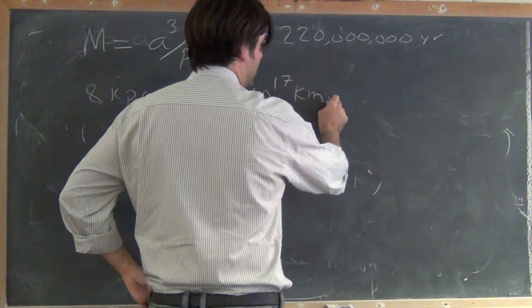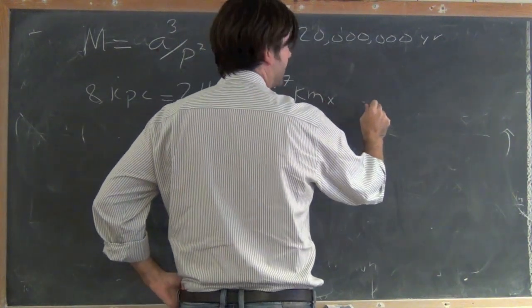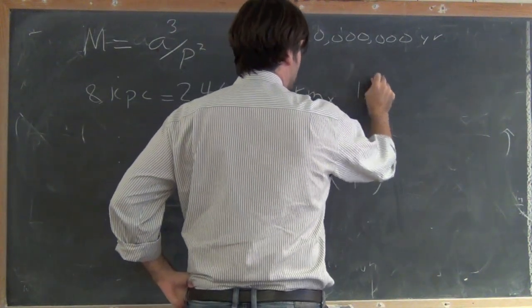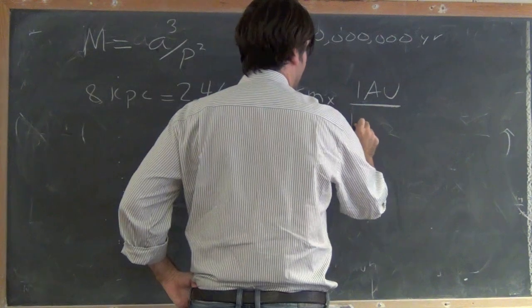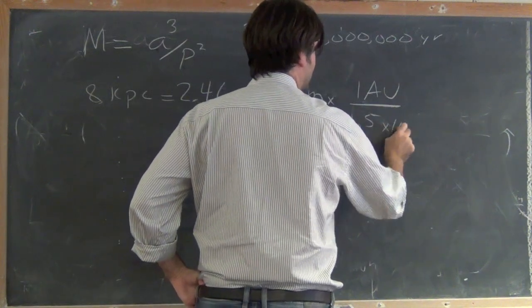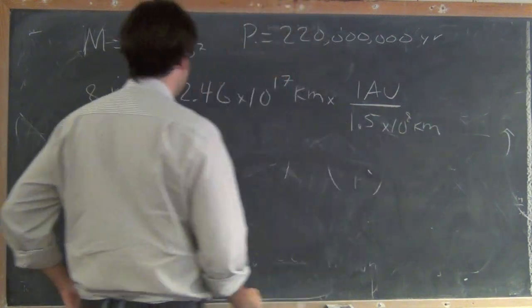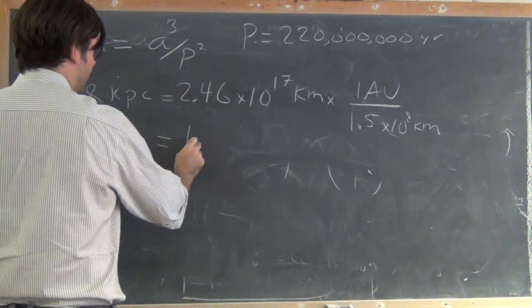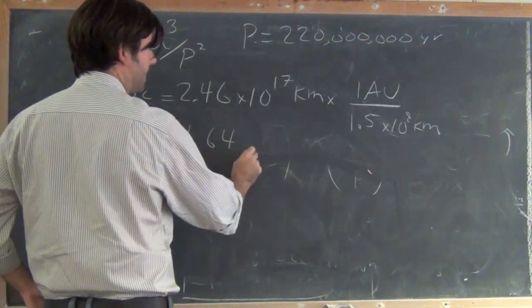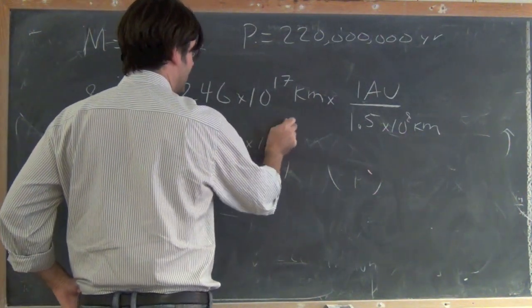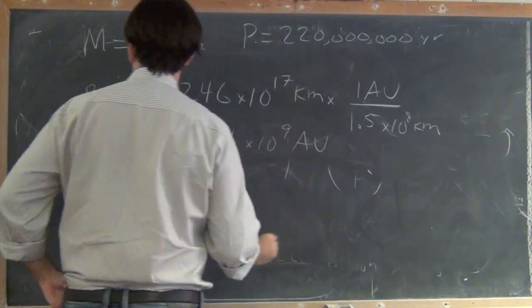You can look this up that one astronomical unit is the same as 1.5 times 10 to the 8th kilometers, which means that this whole thing is 1.64 times 10 to the 9th astronomical units.